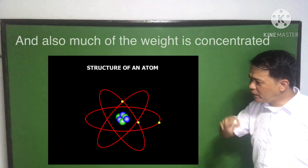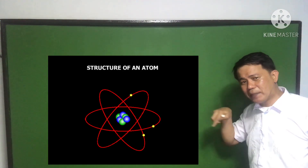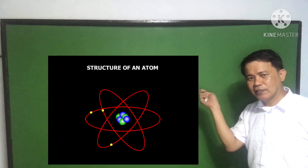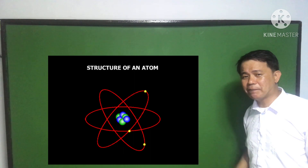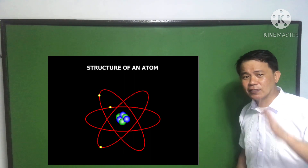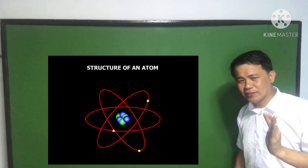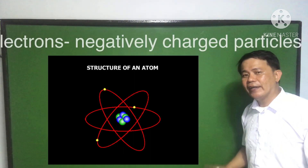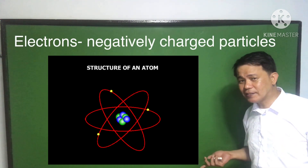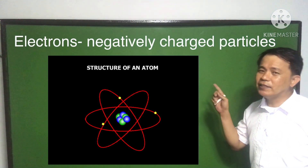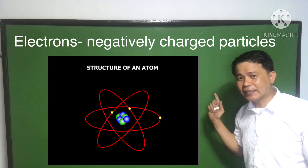Now, the ring part, or the orbits, is where you can find the last subatomic particles called the electrons. And what are the electrons?